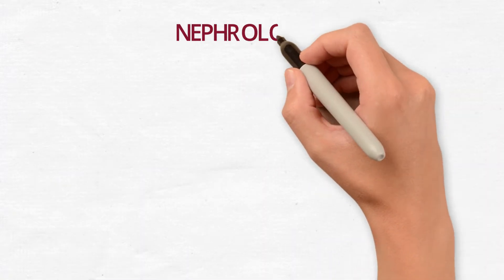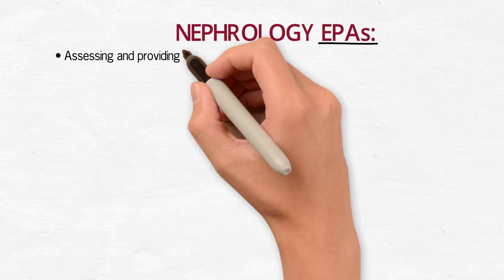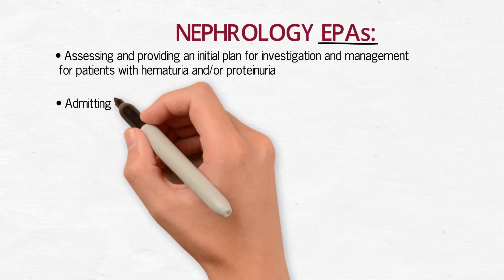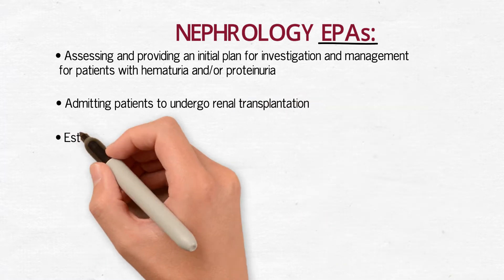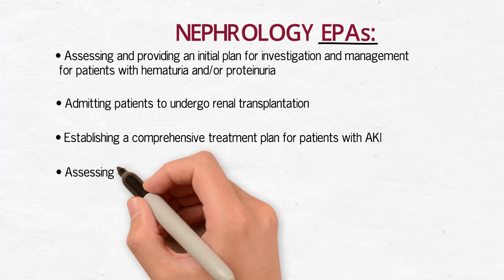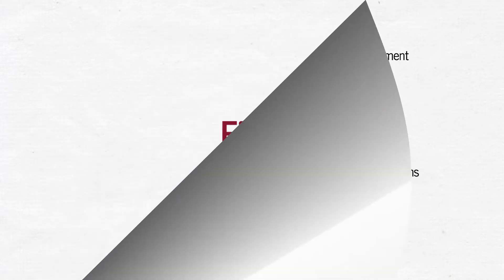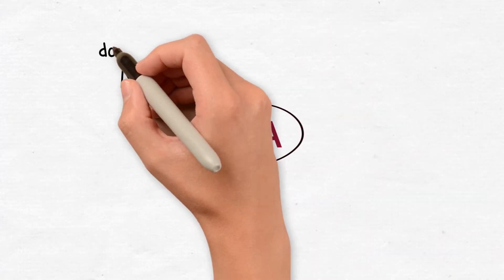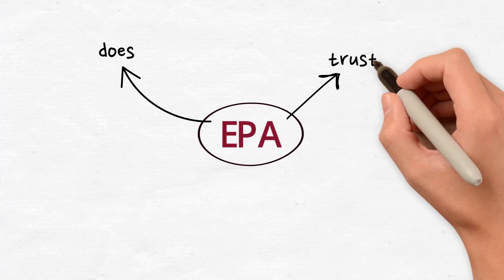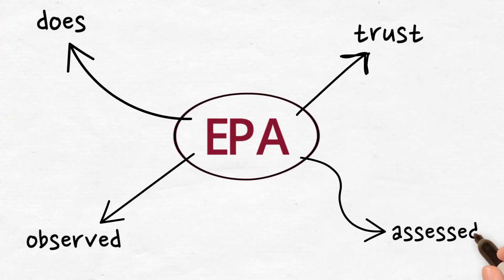Let's review some concrete examples. These are some EPAs for nephrology: assessing and providing an initial plan for investigation and management for patients with hematuria and/or proteinuria; admitting patients to undergo renal transplantation; establishing a comprehensive treatment plan for patients with AKI; assessing and managing the care of patients with complex complications of dialysis access. Each EPA is a unit of work and outlines something a nephrologist actually does. You can also imagine a resident being trusted to function independently for each of these activities, and so it's something on which a learner can be both observed and assessed.